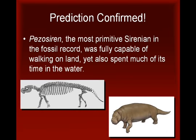This prediction was confirmed by the unearthing of Pezosiren, the oldest and most primitive sirenian in the fossil record, which was found in 50 million year old deposits from Jamaica. Pezosiren was fully capable of walking on land, with four well-developed legs and a long tail. However, the details of its nasal opening and its thick ribs suggest that Pezosiren also spent much of its time in water, making it a clear intermediate form between land animals and fully aquatic sirenians.